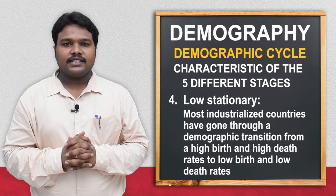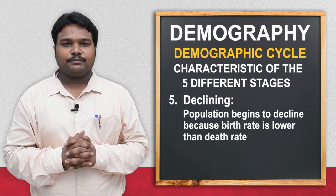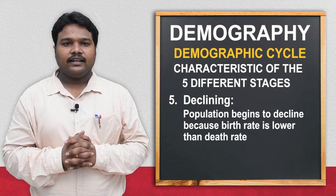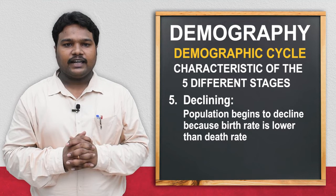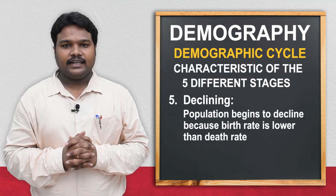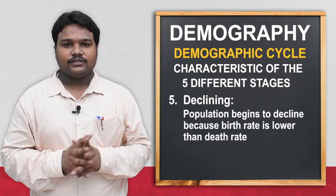In the fifth and final stage, the declining stage: birth rate is lower than the death rate, death rate is more low, the demographic gap is reversed, population is declining, and population composition is aging.